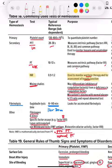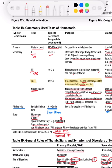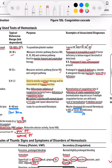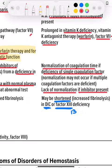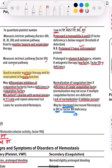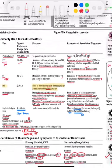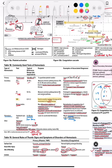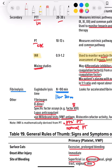Then we talk about fibrinolysis — fibrin breaks down. The normal time is more than 90 minutes, but it could be shortened when there's increased fibrinolysis in DIC or factor 13 deficiency. With factor 13 deficiency, there is no factor 13 to stabilize the fibrin, so there would be more lysis and the time is shortened. In DIC, there is thrombosis going on everywhere and shortened fibrinolysis time. We also test fibrinogen, D-dimers, specific factor assays like factor 8, lupus anticoagulant, and von Willebrand tests — including von Willebrand factor antigen, Ristocetin cofactor activity, and factor 8.